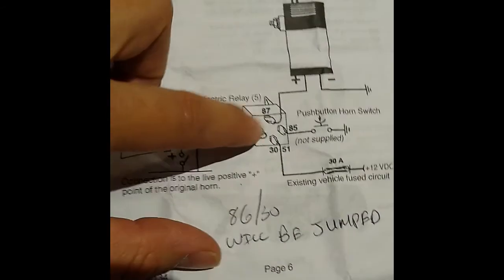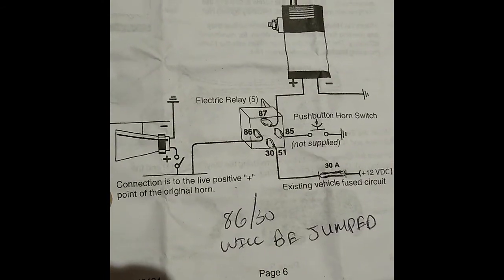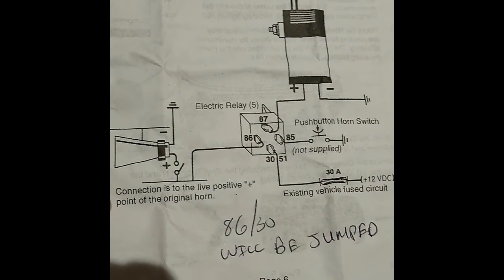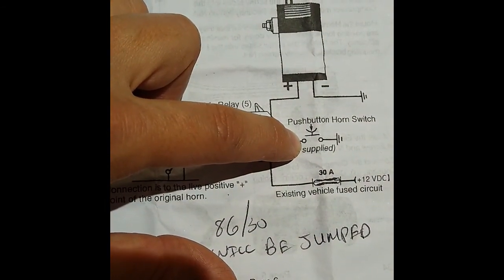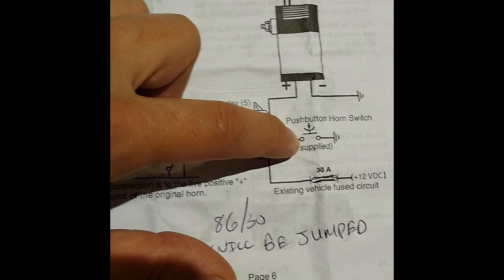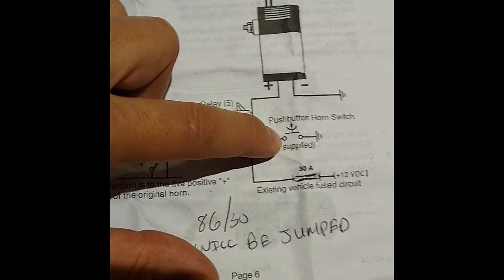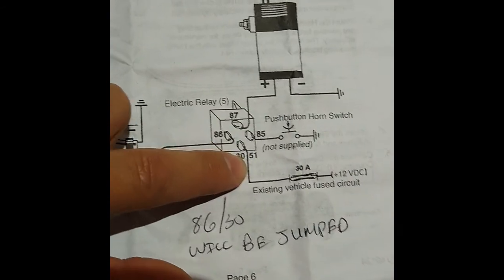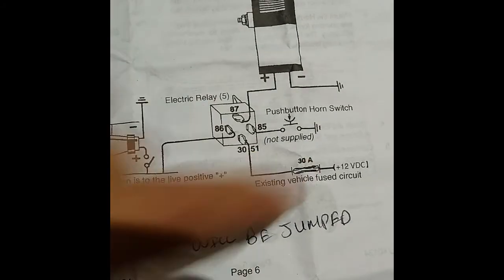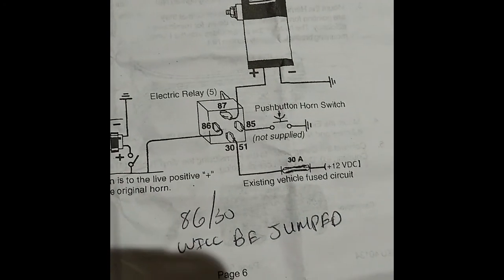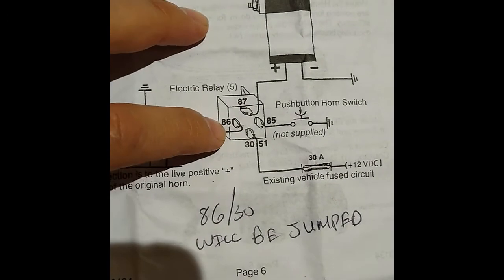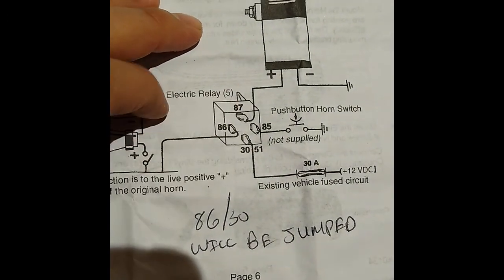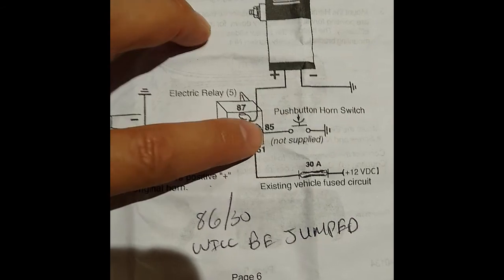What they're saying is that 86 goes to your original horn positive side. If you have a momentary switch, that's going to basically complete your ground, which would complete the circuit and activate the horn. 30 is pretty self-explanatory. That just basically goes to your battery to supply power, and then 87 also self-explanatory. So 87 and 30 weren't in question here. What was in question was 86 and 85.